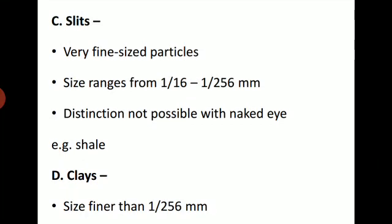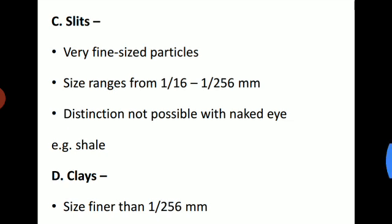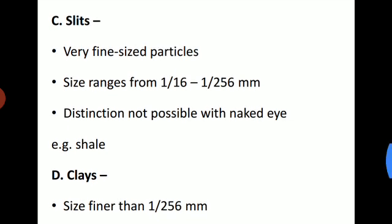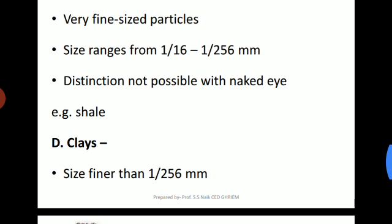The next type is silts. Silts are very fine-size particles, ranging from 1/16 to 1/256 mm. It is not possible to distinguish individual particles with the naked eye. For example, shale. The last clastic type is clay, with size finer than 1/256 mm.